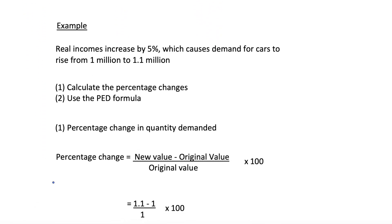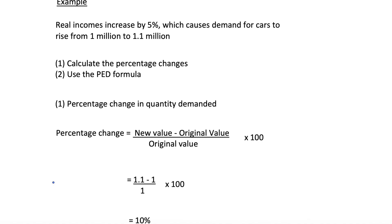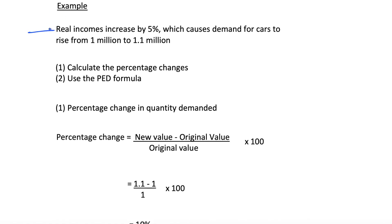Let's go straight into an example. In our example, we're going to have real incomes increasing by 5%, which will cause the demand for cars to rise from 1 million to 1.1 million.